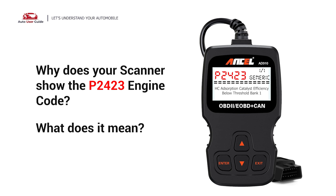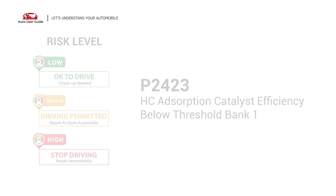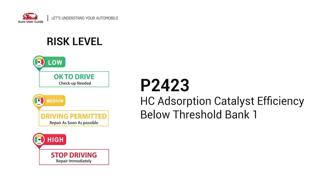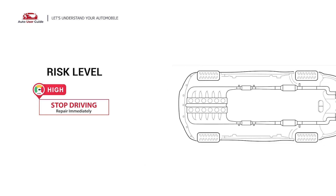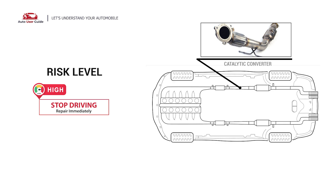Why does your scanner show the P2423 engine code? What does it mean? P2423 is a diagnostic trouble code for HC adsorption catalyst efficiency below threshold bank 1. It indicates that the hydrocarbon adsorption catalyst efficiency is below the allowed threshold in engine bank 1.